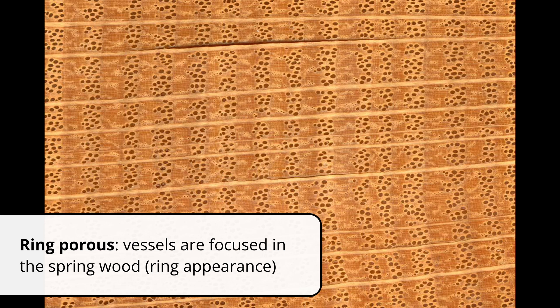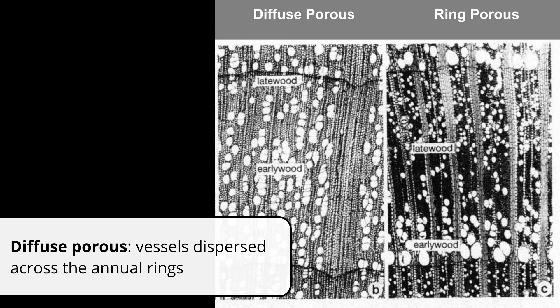The more famous examples of ring porous trees include oak, but also ash, black locust, catalpa, and so on. If the vessels are not concentrated and are just dispersed, they're called diffuse porous. Species include alders, birches, buckeye, maple, tilia, willow, and poplars.